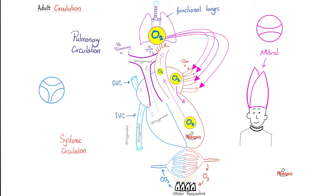Blood passes through the tricuspid valve. Every valve in your heart has three cusps except one — the mitral valve, between the left atrium and the left ventricle, has only two cusps. Why do they call it mitral? Because it's similar to la mitre, which is a religious hat for some Catholic clergyman.